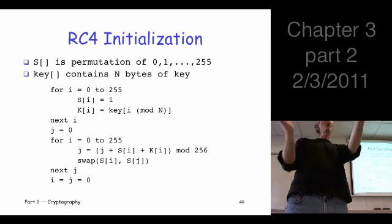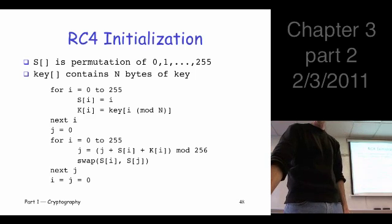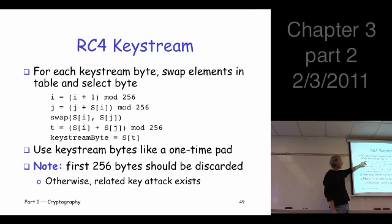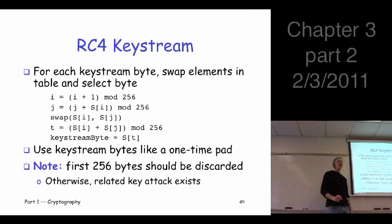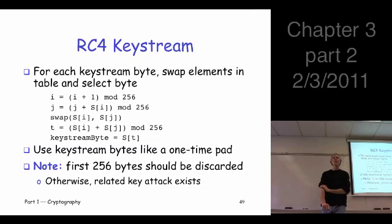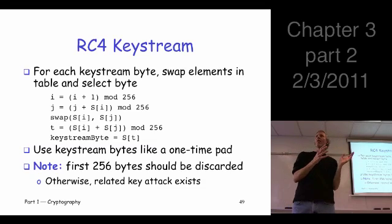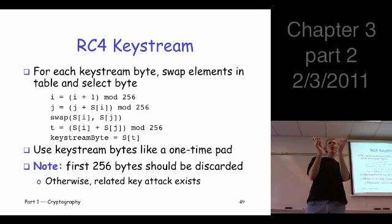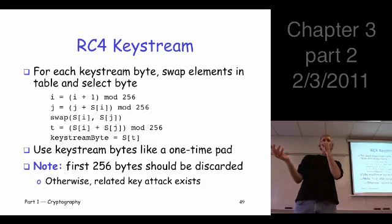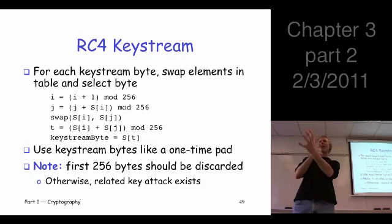I've scrambled up that permutation, and now I'm good to go to generate a key stream whenever I need it. You can write this code — it's just a few lines. You start with index i stepping regularly; j kind of jumps around based on what's in the table at any given time. You swap those two elements, get another index, and that element is what you use for your key stream byte. Not only do you generate a key stream byte, but you also swap a couple of elements in the array. So from the attacker's point of view, that array keeps changing, which is really annoying — you can't get a fix on it because it's constantly changing as the key stream is generated.